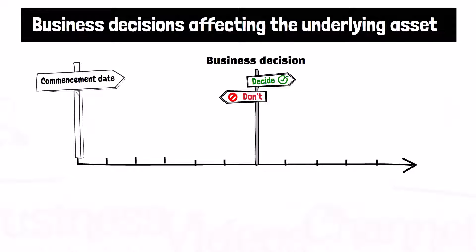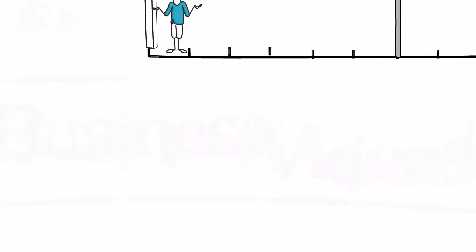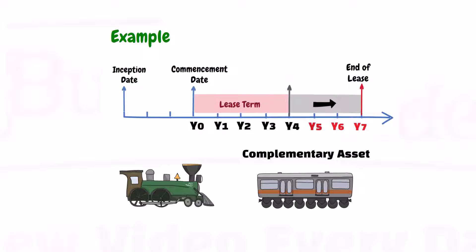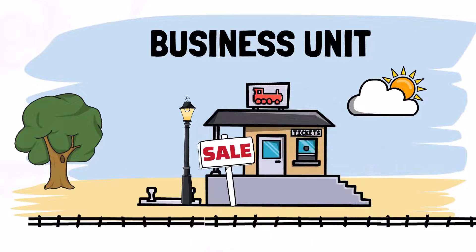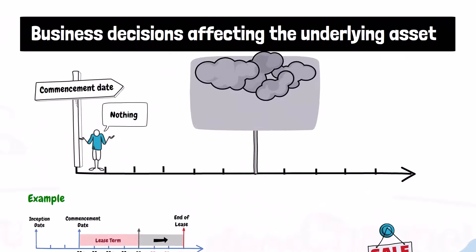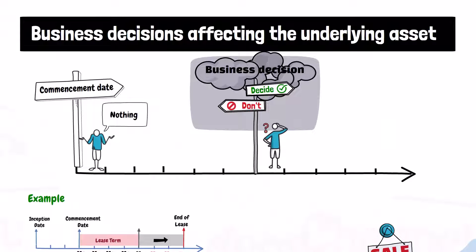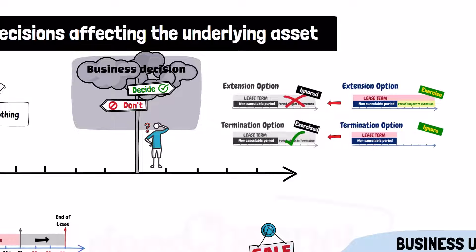Also, a business decision that should be taken during the lease term, and that was not anticipated on the commencement date — for example, a decision to extend the lease of a complementary asset, or to dispose of an alternative asset, or to dispose of a business unit within which the underlying asset is used. If it was known from the beginning about that decision, the lessee would have considered an option to extend or terminate the lease that was not considered when assessing the lease term on the commencement date.